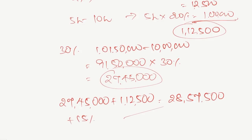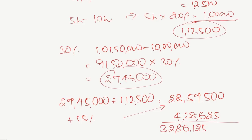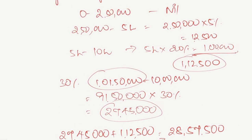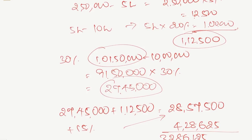15% on 28 lakhs 57,500 gives a surcharge of 4 lakhs 28,625. Adding surcharge to the base tax, the total tax liability including surcharge is 32 lakhs 86,125. This is the tax liability for an assessee with income of 1 crore 1 lakh 50,000, calculated without marginal relief.